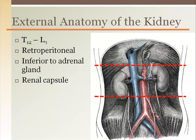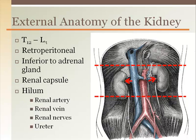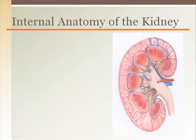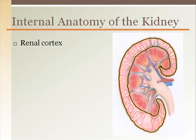The kidney is shaped so that it arcs medially, and within that arc is the hilum, where the renal artery enters, the renal vein exits, and the ureter and renal nerves are found.